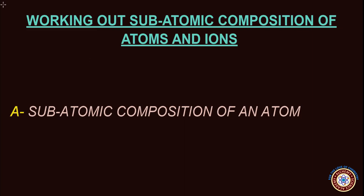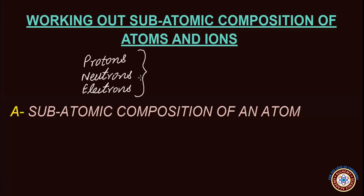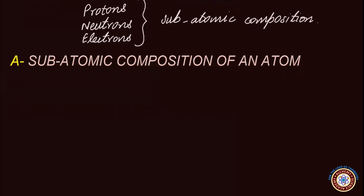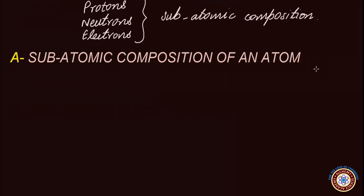The subatomic composition of atoms consists of protons, neutrons, and electrons. This set of three subatomic particles for atoms and ions is called their subatomic composition. In order to work out the subatomic composition of a given atom or ion, it is very important to know its proton number and nucleon number.